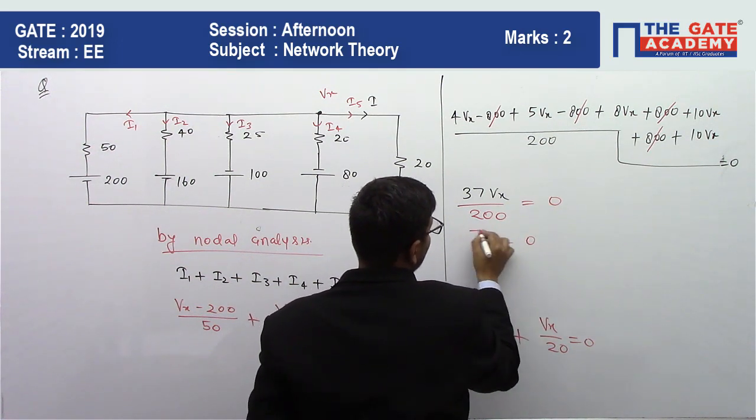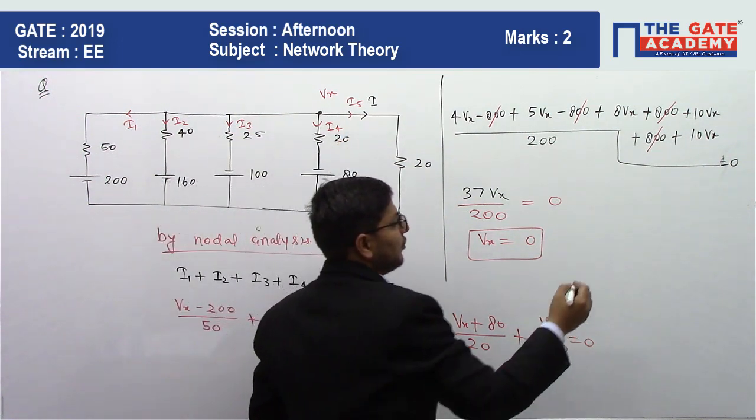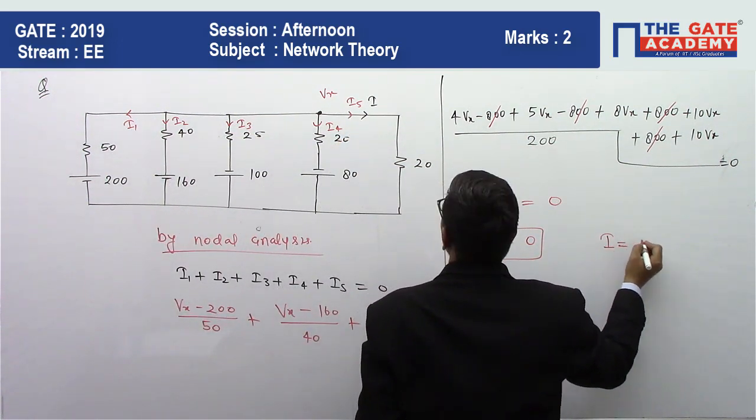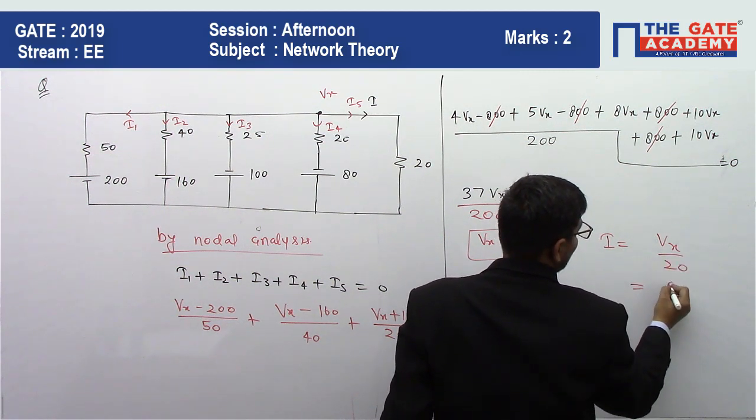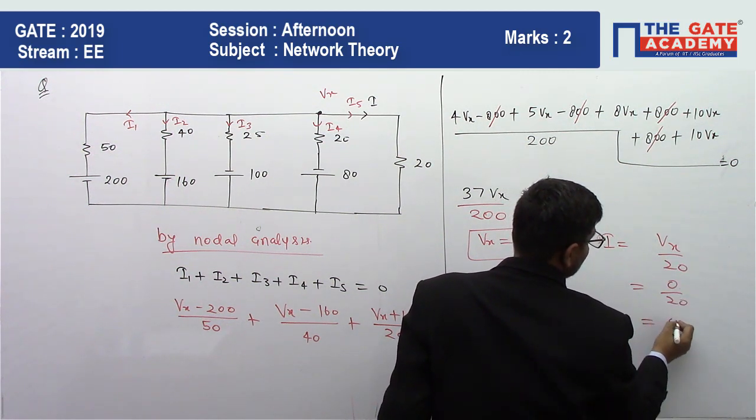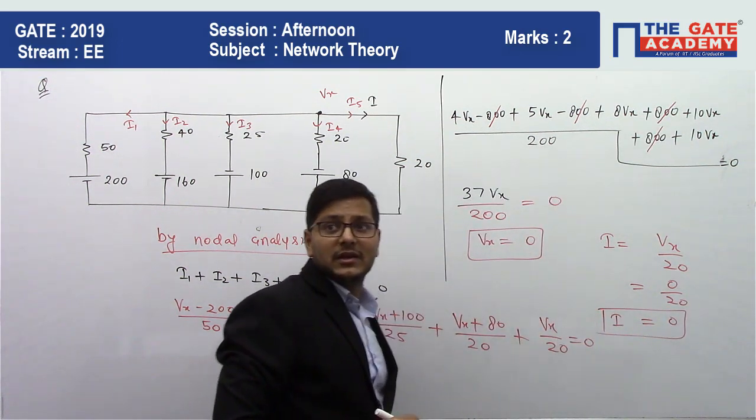From there we can get Vx is equal to 0. We have to find the value of i. What is the value of i? The value of i is equal to Vx upon 20. If Vx's value is 0, 0 upon 20 will be 0. It means the value of i will be 0.